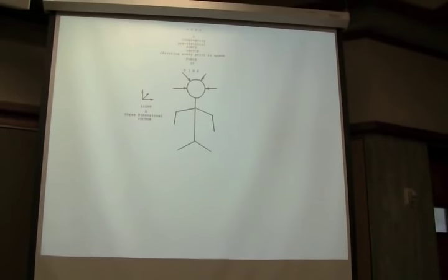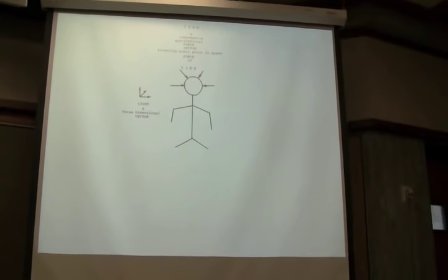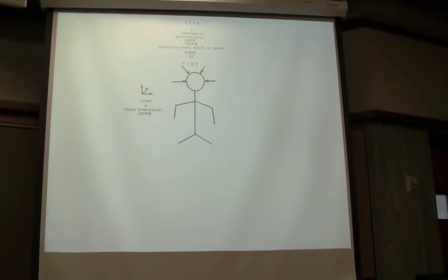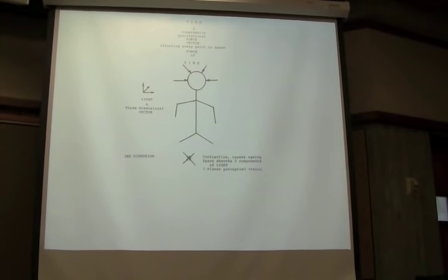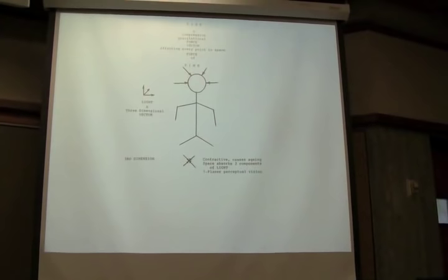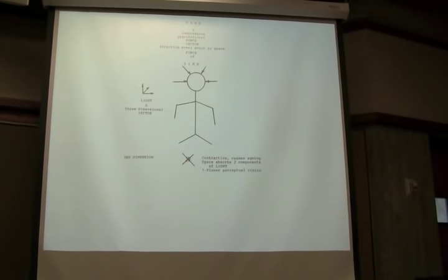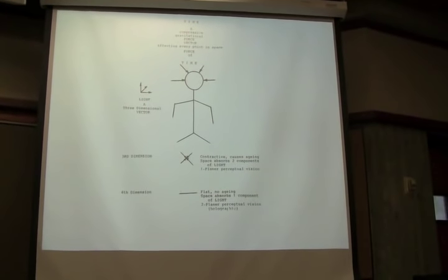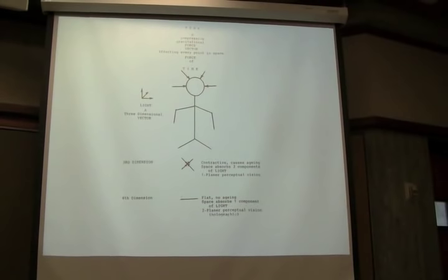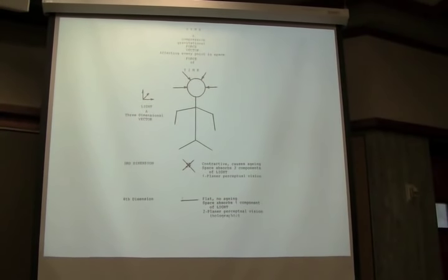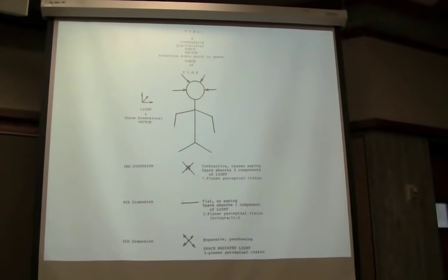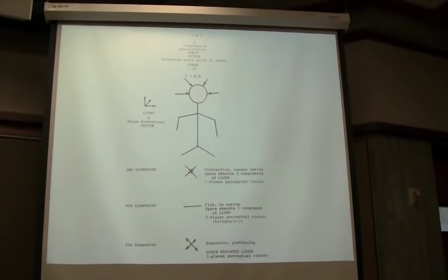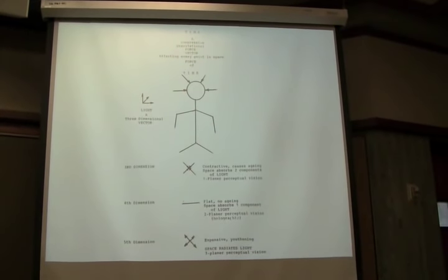Here's another one. Time, an oppressive gravitational force vector affecting every point in space, the force of time pushing down this poor person's head. Light is a three-dimensional vector. The third dimension is contractive and causes aging. Space absorbs two components of light and one planar perceptual vision. I'm not sure what that means. I'm not sure what any of this stuff means. The fourth dimension: flat, no aging. Space absorbs one component of light, two-planar perceptual vision, holographic. And finally, the fifth dimension: expansive and youthening. Space radiates light, three-planar perceptual vision. I don't know about you, but I'm convinced.